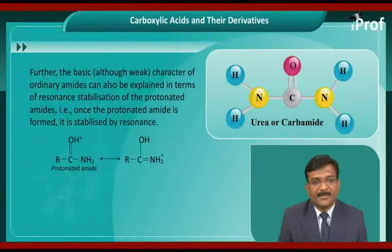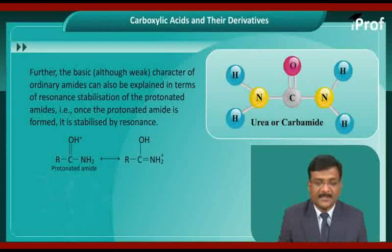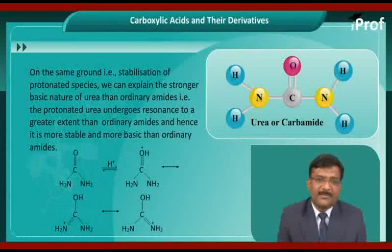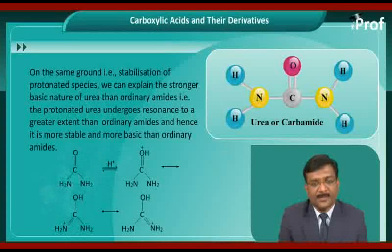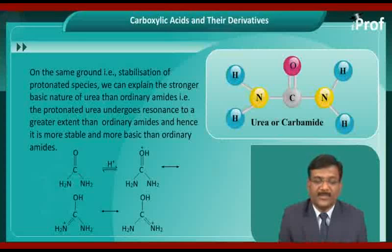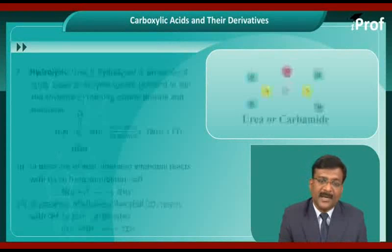The basic character of ordinary amides can also be explained in terms of resonance stabilization of the protonated amide — that is, once the protonated amide is formed, it is stabilized by resonance. On the same grounds of stabilization of the protonated species, we can explain the stronger basic nature of Urea than ordinary amides: the protonated Urea undergoes resonance to a greater extent than ordinary amides, and hence it is more stable and more basic than ordinary amides. The next chemical property is hydrolysis.